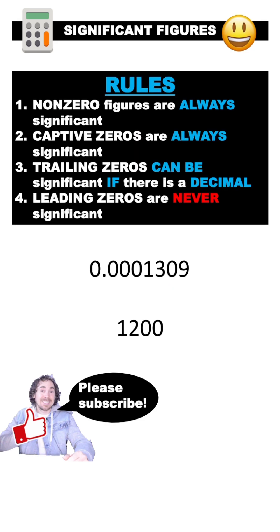Here's how we can use these rules to determine how many significant figures a measurement has. The first measurement has four significant figures. The leading zeros are not significant, but these non-zero digits are significant, and so is this captive zero.